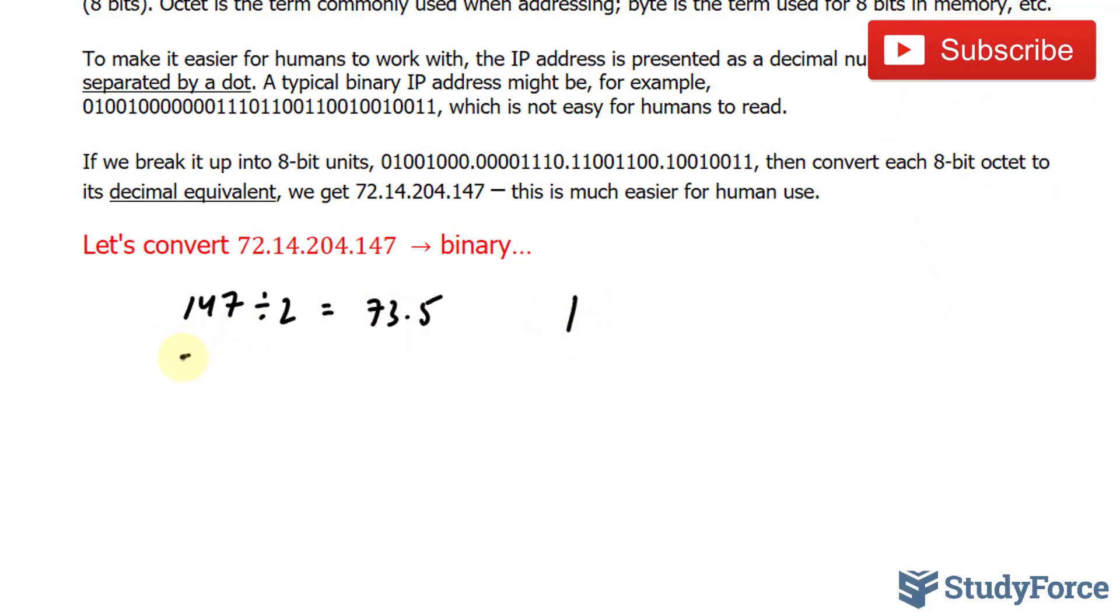Next, we'll take the integer part, 73, and divide that by 2. That should give us 36.5, another decimal. So we assume that there was a remainder, that's read as 1.